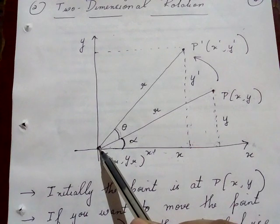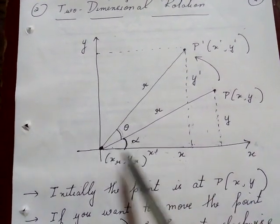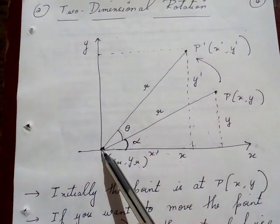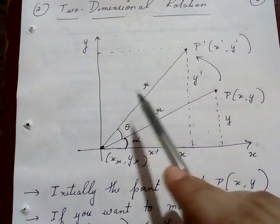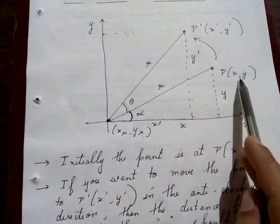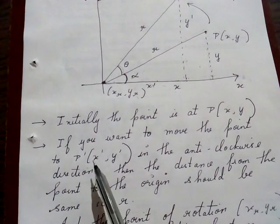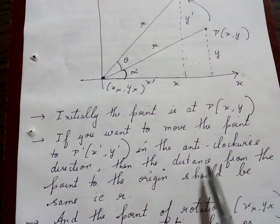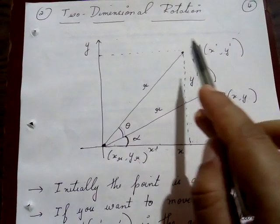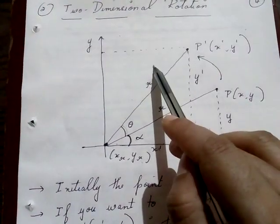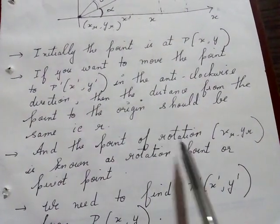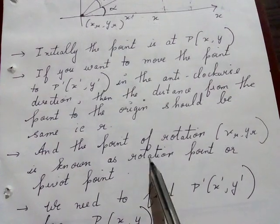The particular point at which you are rotating is called the rotation point or pivot point, and we indicate it as (x_r, y_r). Initially the point is at P(x, y). If you want to move the point to P'(x', y') in the anticlockwise direction, the distance from the point to the origin should remain r. The rotation point (x_r, y_r) is known as the rotation point or pivot point.